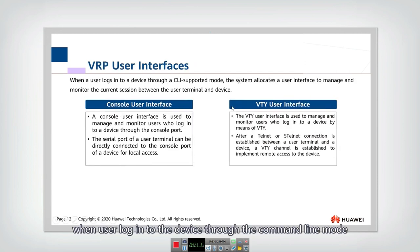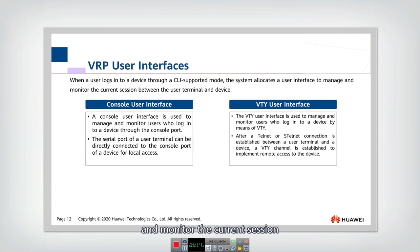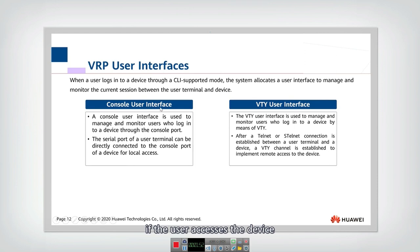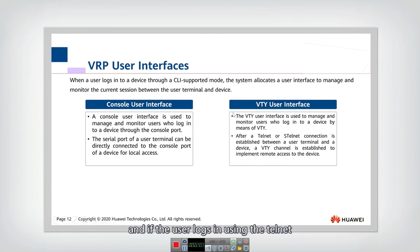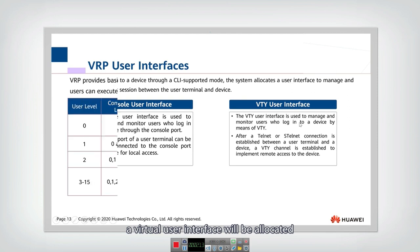When a user logs in to the device through command line mode, the system needs to allocate a user interface to manage and monitor the current session. There are two different kinds of user interface. If the user accesses the device using the console port, a console user interface will be allocated. If the user logs in using Telnet, a virtual user interface will be allocated.